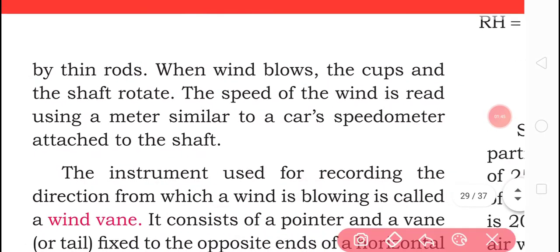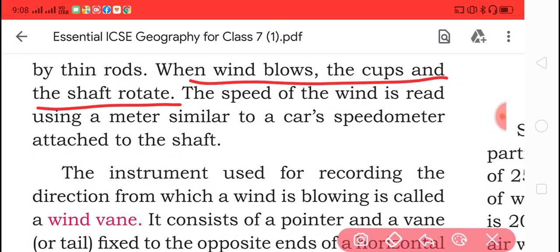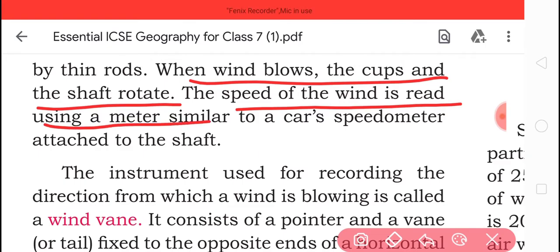When the wind blows, the cups on the shaft rotate. The speed of the wind is read on the meter or speedometer attached to the shaft.